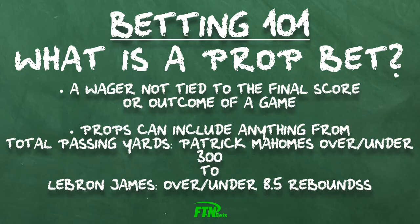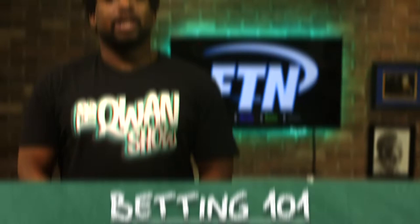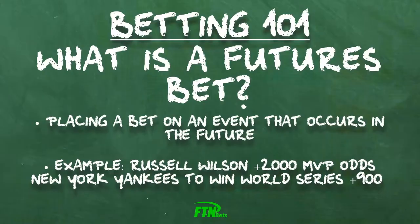A prop bet or proposition bet is a type of sports bet that's not directly related to the outcome of a single game. Examples of prop bets would be whether or not Patrick Mahomes will throw for over or under 300 yards in this week's game, or whether LeBron James would snag over or under 8.5 rebounds. Now there are also futures bets, which aren't the same as prop bets, but are often thought of in the same light. A futures bet is true to its name — it's when you place a bet on an event that will occur in the future, such as whether Russell Wilson will win MVP next year or if the New York Yankees will win the World Series.